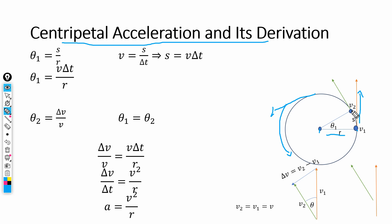We now have two velocity vectors, v1 and v2. If we draw a line from point v1 to the center of the circle, and another line from point v2 to the center, we form a triangle — let's call it triangle ABC. In this triangle, each side has length r, the angle at the center is theta, and the arc length is s.